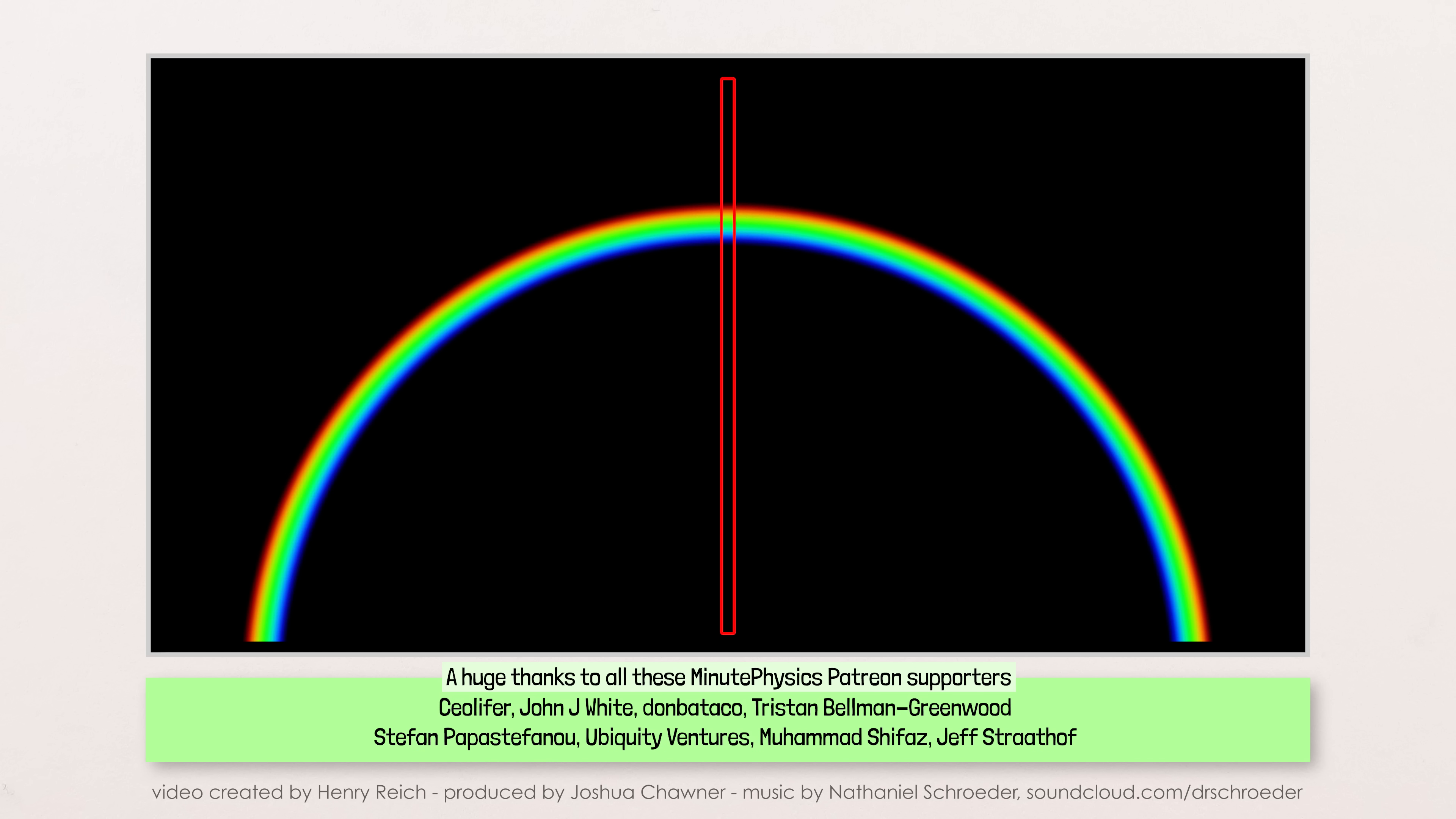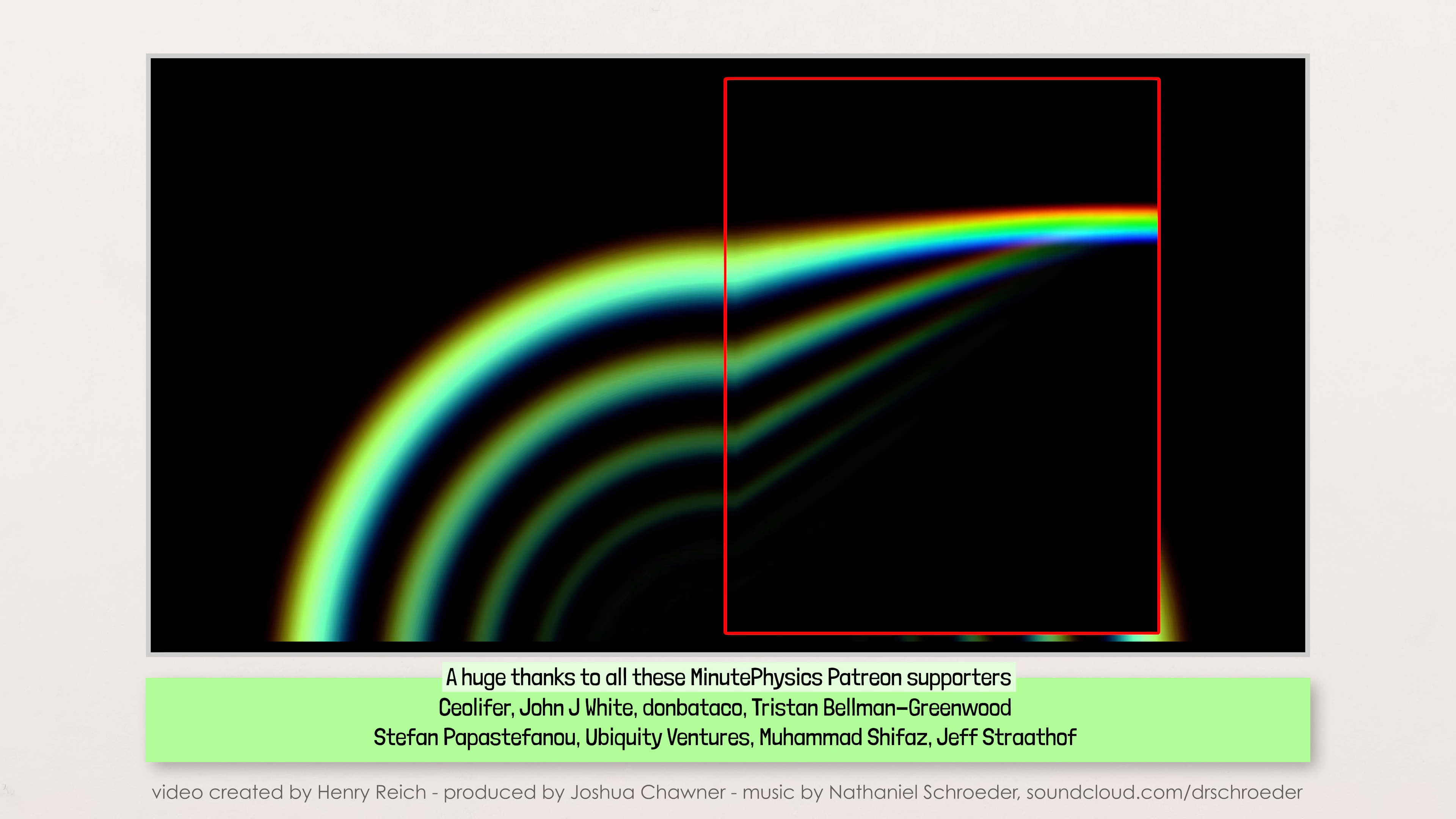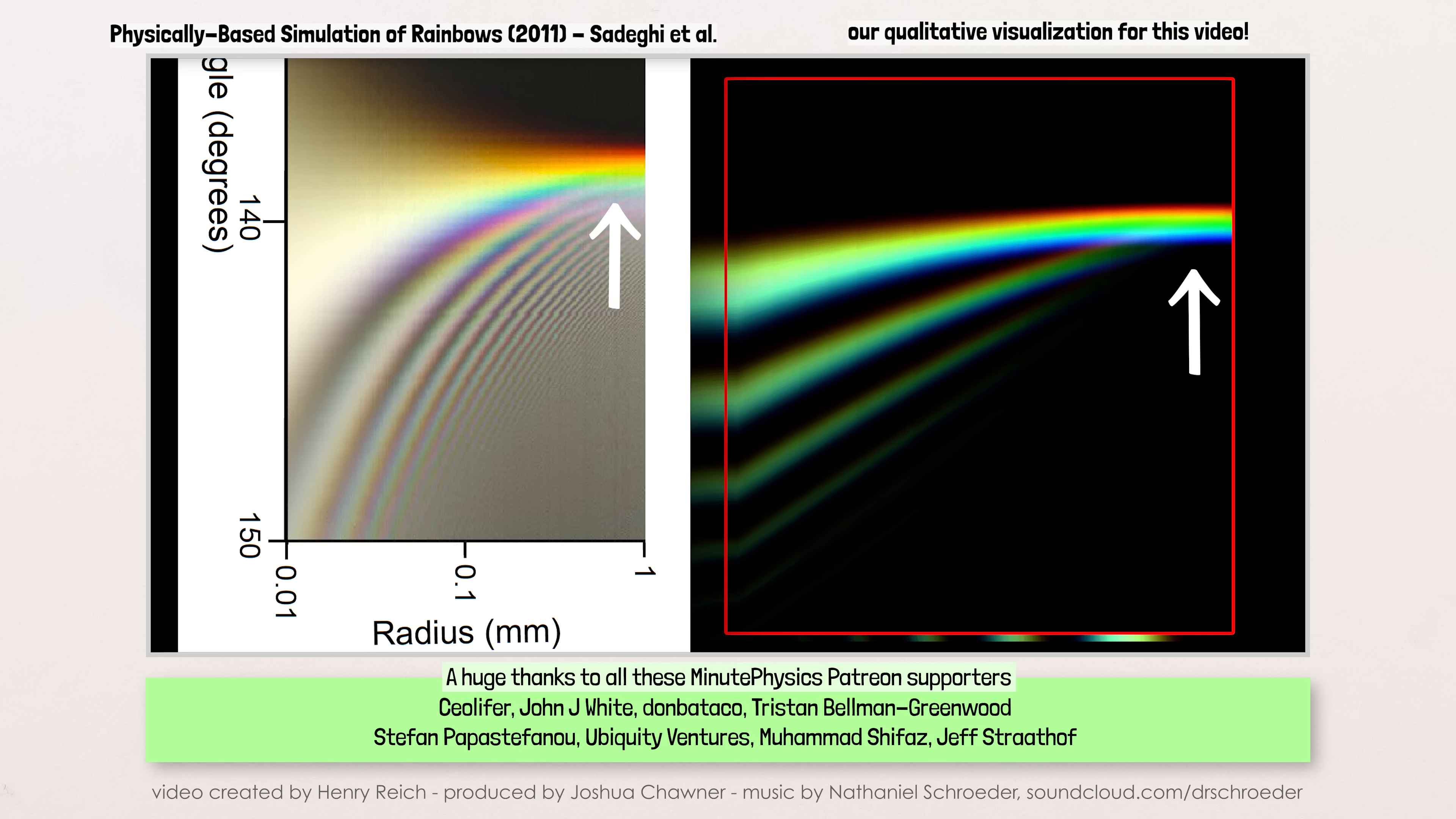P.S. If you take just a single slice from a rainbow and plot how the rainbow changes as the water drop size gets smaller, you get a really cool diagram. On one end, we have slices corresponding to the purest colored rainbows, and on the other end, slices corresponding to pure white fog bows, with all the other varieties of rainbows with supernumerary bows in between. It's a true opera of colors.